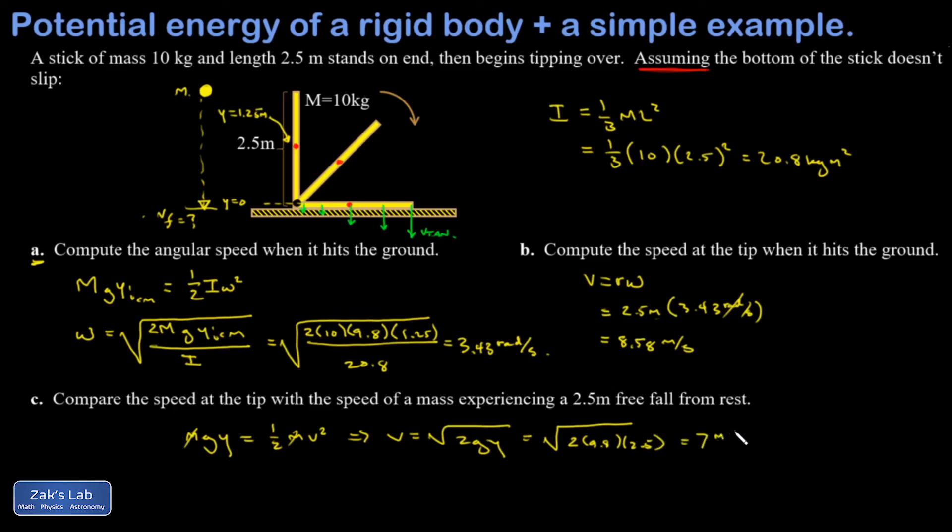And what's surprising to me anyway is that it turns out the tip of this rod falling over without slipping in this pure rotation is actually moving faster than what you would get for an object just falling straight down through the same distance. So that's it.